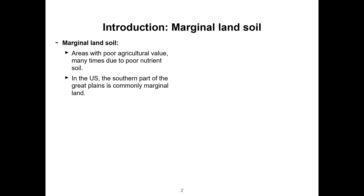First I will describe what marginal lands are. Those are areas with poor agricultural value, mainly because of their poor soil quality. In the United States you can find them in the southern parts of the Great Plains.